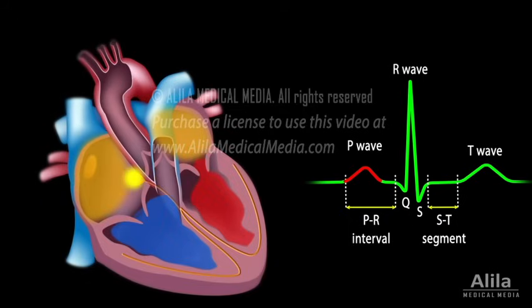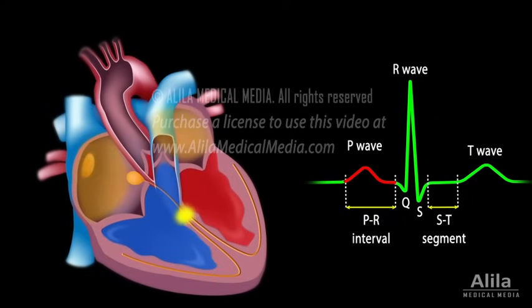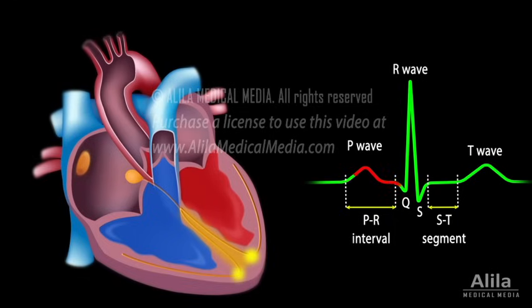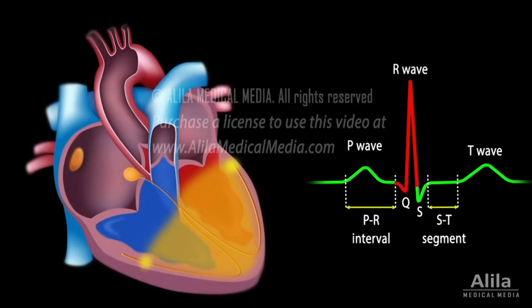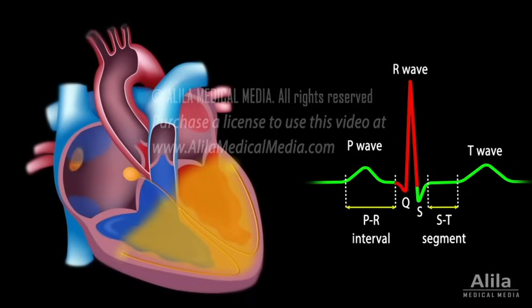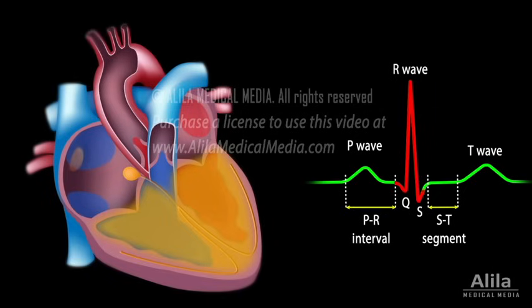The PR interval, which measures from the start of the P wave to the start of the QRS complex, represents the time between atrial depolarization and ventricular depolarization and reflects the conduction through the AV node. The QRS complex represents ventricular depolarization. The Q wave corresponds to depolarization of the interventricular septum. The R wave is produced by depolarization of the main mass of the ventricles. The S wave represents the last phase of ventricular depolarization toward the base of the heart. Atrial repolarization also occurs during this time, but the signal is obscured by the large QRS complex.